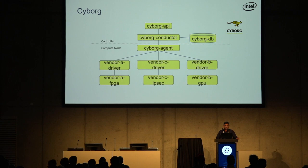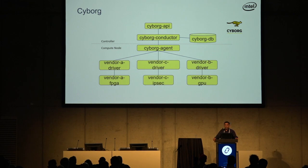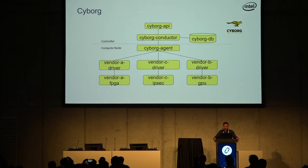In terms of Cyborg's internal structure, it's structured like many other OpenStack projects. There's an API server — all external requests go through that. There's a conductor also running on the controller. It talks to a database, which is MySQL like most projects. This is all fairly straightforward.